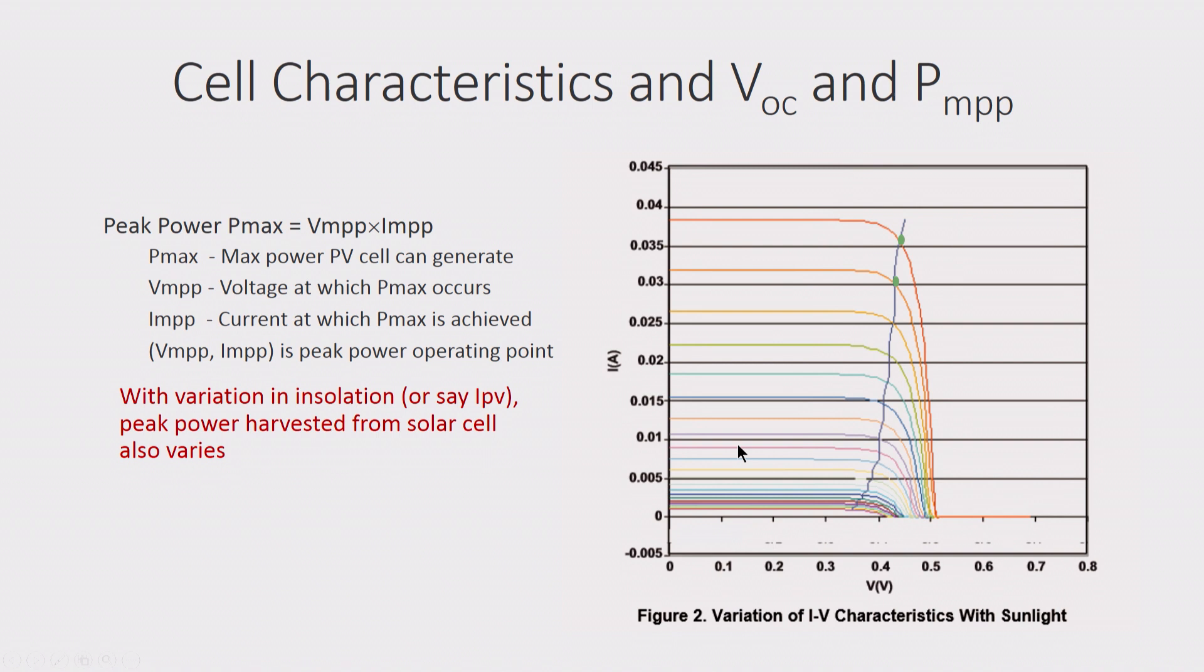This is what I showed earlier. As more and more power falls, you see these light lines are dependent on the amount of solar power incident. And this is the voltage versus current. Now, I have put everything in positive, because that is how I will operate. I will always put it in reverse direction. I am not bothered about the forward direction.